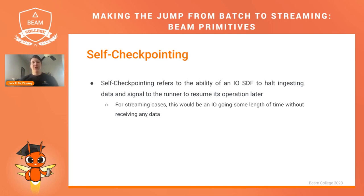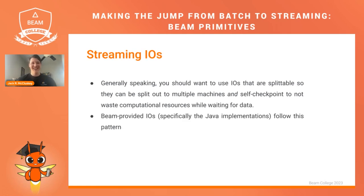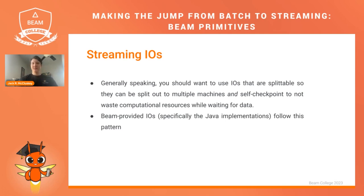In some SDKs, there are IOs that have SDF implementations and more typical DoFn implementations. Always opt for the SDF — that is the pro tip. Generally speaking, you want to use IOs that are splittable so they can split out to multiple machines and self-checkpoint so you're not wasting computational resources waiting for data. Beam-provided IOs follow this pattern. The Java implementations are typically the gold standard — the most mature, the most heavily developed, and leaned on a lot for things like Dataflow templates. Always read your doc strings to make sure, because you don't want a performance bottleneck from using the wrong IO.